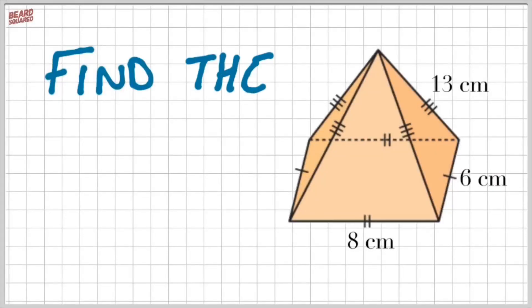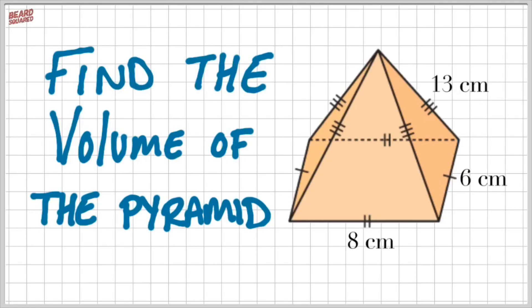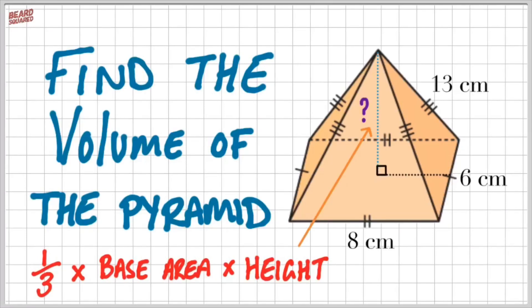We're going to find the volume of this particular pyramid. Notice here that we do not have the perpendicular height. We do have the slant height of 13 centimeters, and we have a base 6 by 8. Normally what we would do is a third times the base area times the height of the pyramid. The height refers to the perpendicular height, which in this case we don't have, so we're going to have to work that out using the Pythagorean theorem.